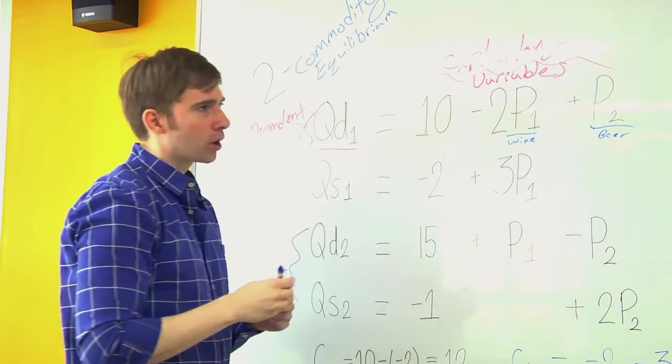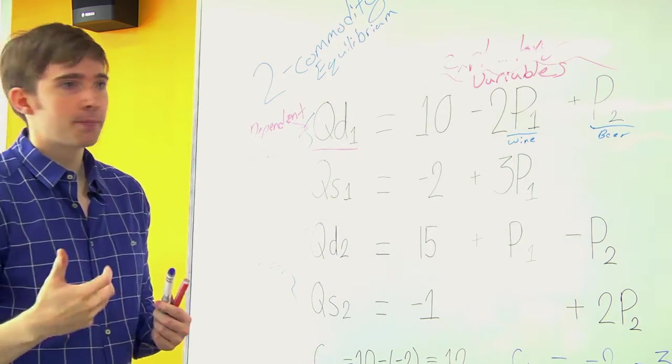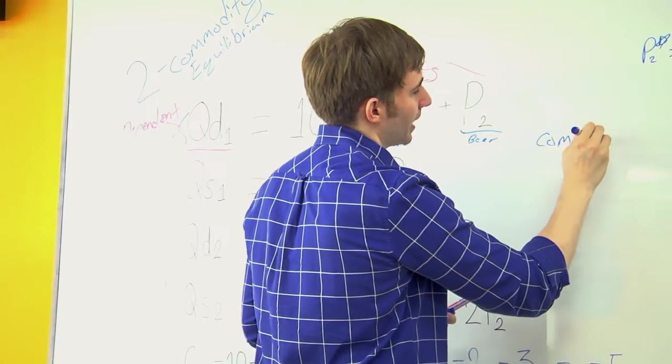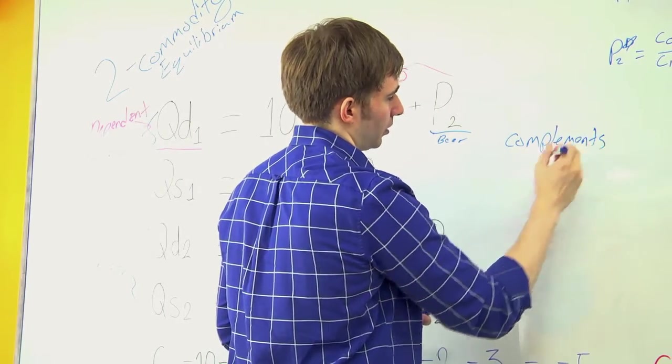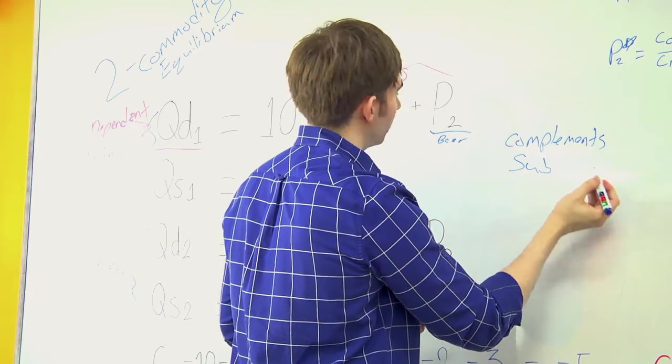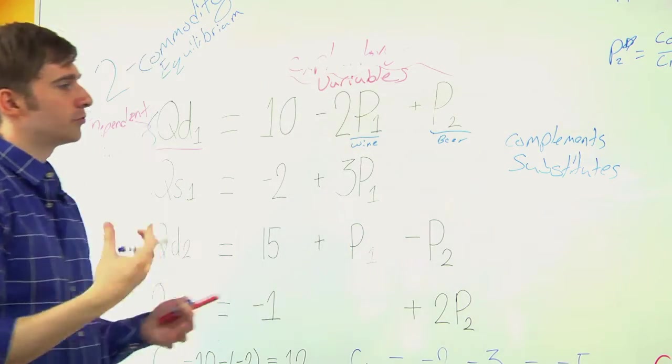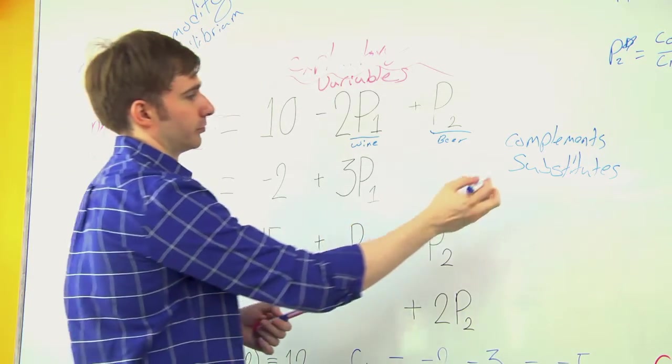Which may be more realistic once you've learned about complements and substitutes and how they can impact demand. So beer and wine in this example would be substitutes.